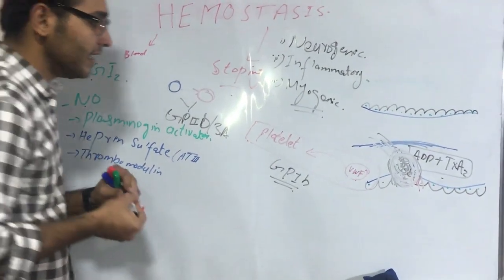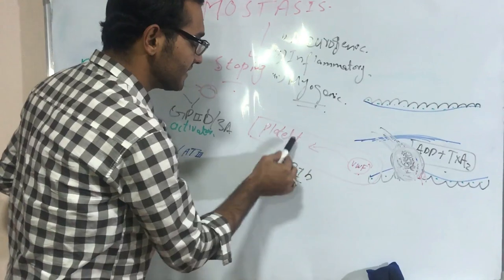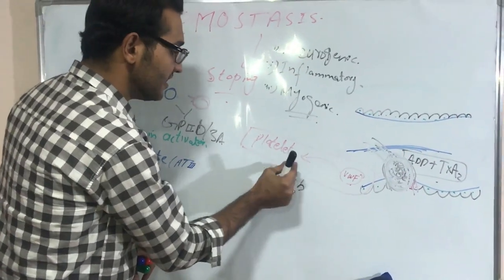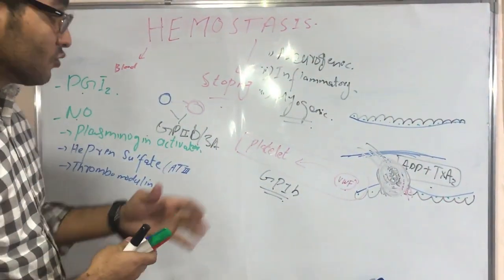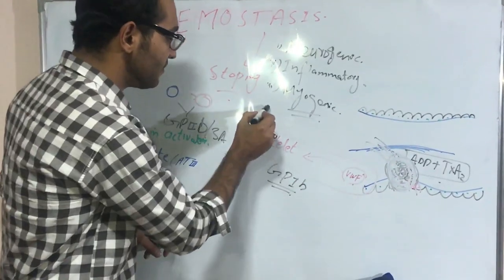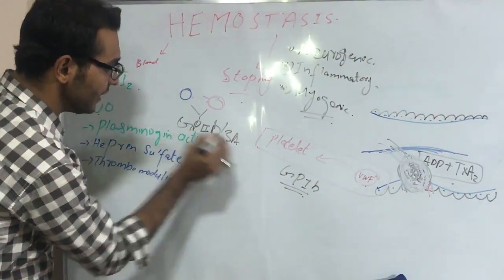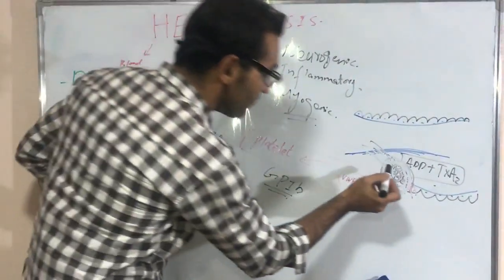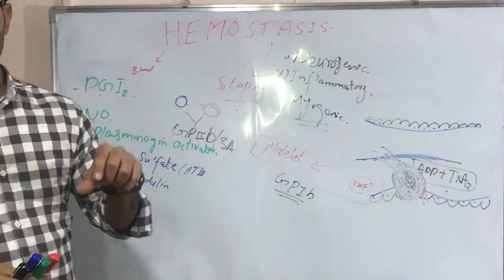Quick review: When there is injury to the endothelial membrane, Von Willebrand factor is released and binds to platelets via the GP1B protein. The platelets release ADP and thromboxane A2 to stimulate other platelets to come to the injured site. These platelets bind to each other via GP2B3A protein, forming a platelet plug. This plug is weak, and for a firm thrombus, the clotting cascade will be discussed further.